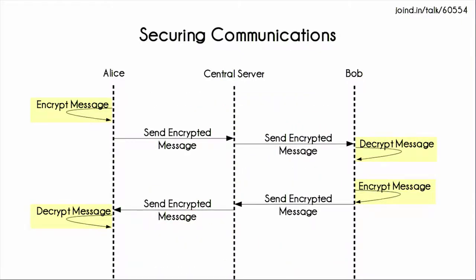This is where we are nowadays. Alice will encrypt the message on her device and send it to the server. Theoretically, sending an encrypted message to the central server doesn't need to be SSL anymore - it probably will be, because it's best practice, but it doesn't need to be because it's already encrypted. The central server can then store it, send it on to Bob. Bob will then decrypt that message on his device.